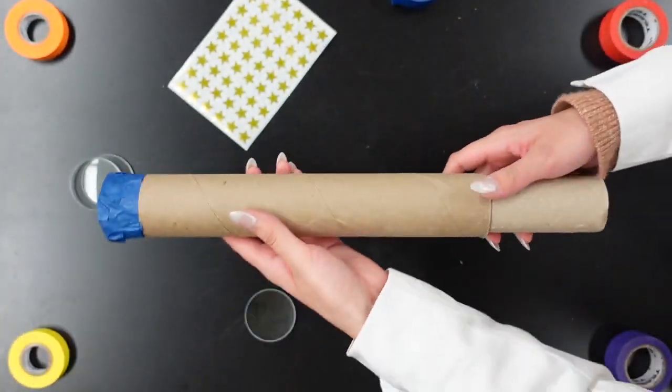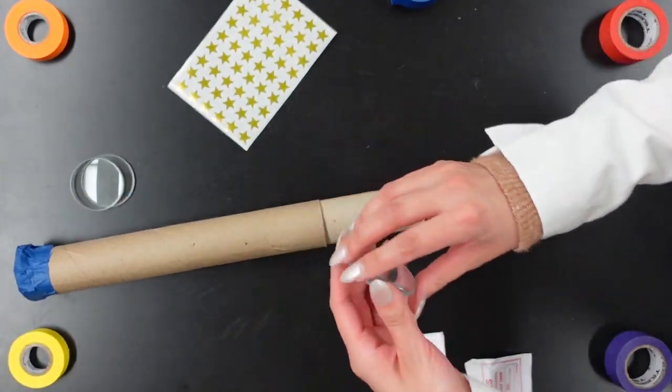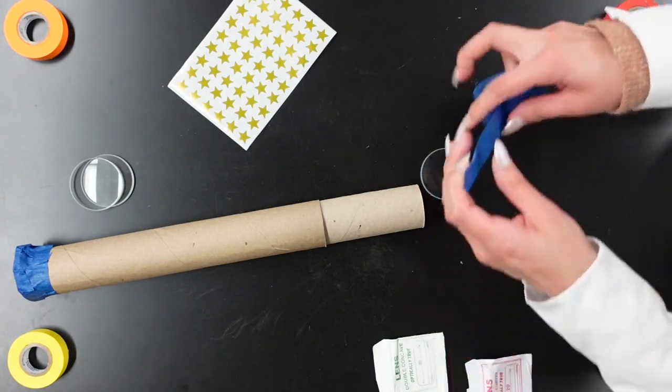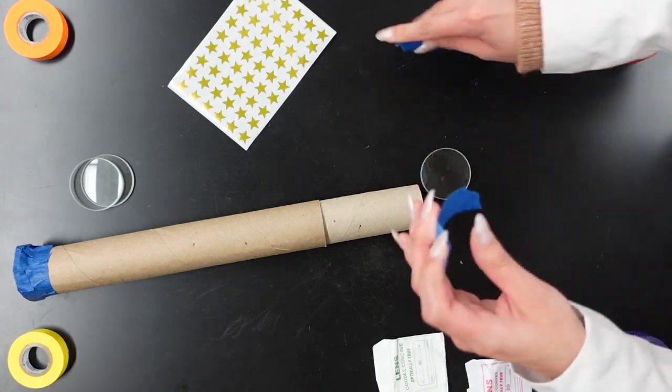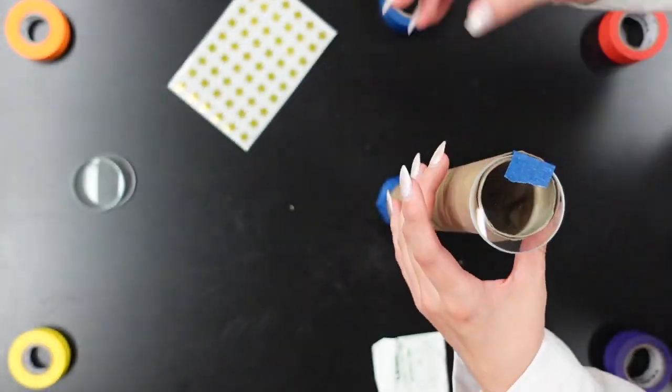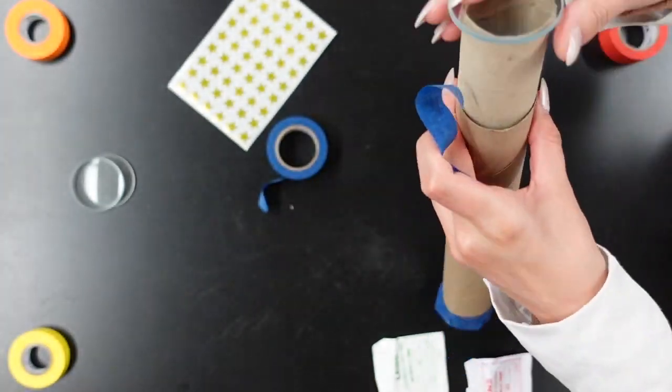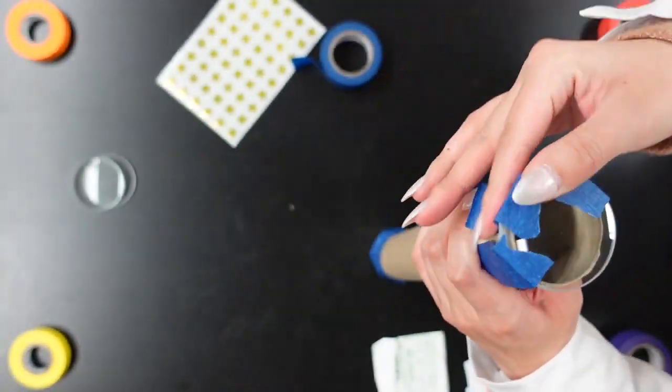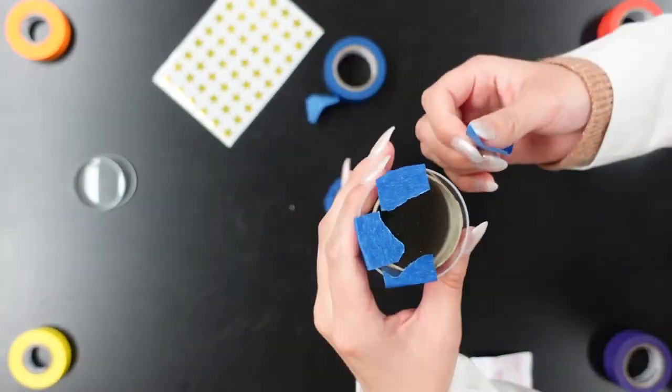And next we're going to go on the other end and we're going to do the same thing with our double convex lens. And again, make sure it's taped securely, but make sure that you're leaving space to see through.